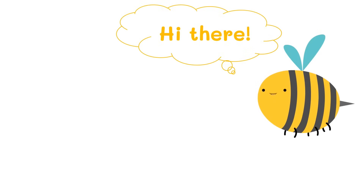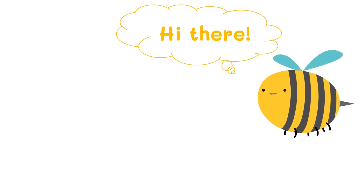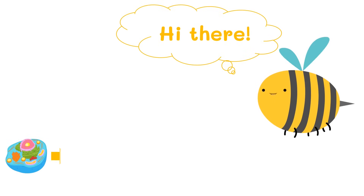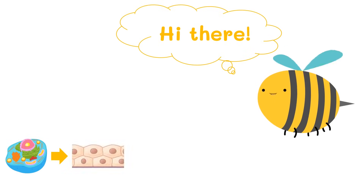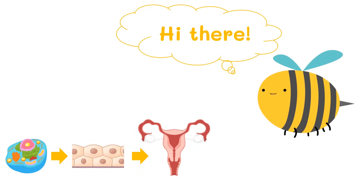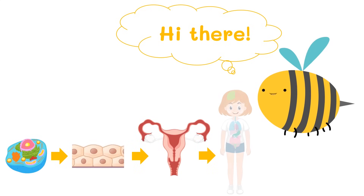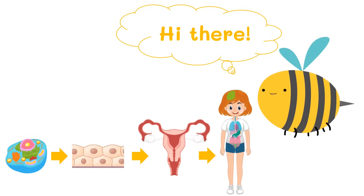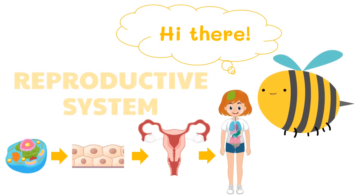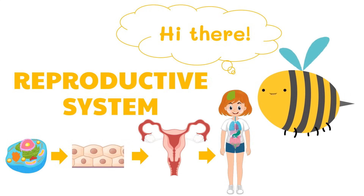Hi there! In seventh grade, we learned that cells make up a tissue, tissues make up an organ, and organs make up a system. In this video, we will get to know how the individual cells of the reproductive system work.